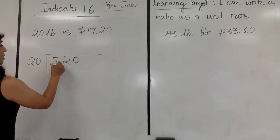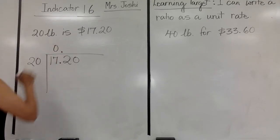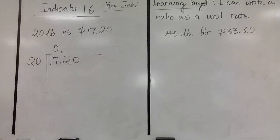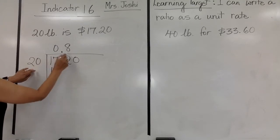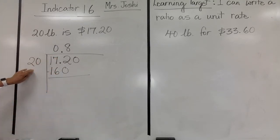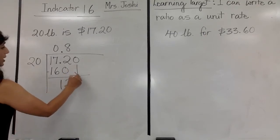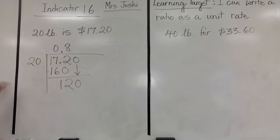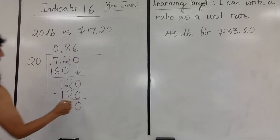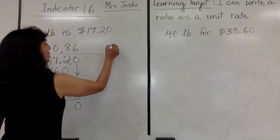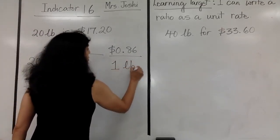So $17.20 divided by 20 - decimal goes above decimal. 17 cannot be divided by 20, so put a 0. Take 172: 8 times 20 is 160, subtract to get 12, bring down the 0. Then 6 times 20 is 120. My unit cost is 86 cents for 1 pound for the 20-pound bag.